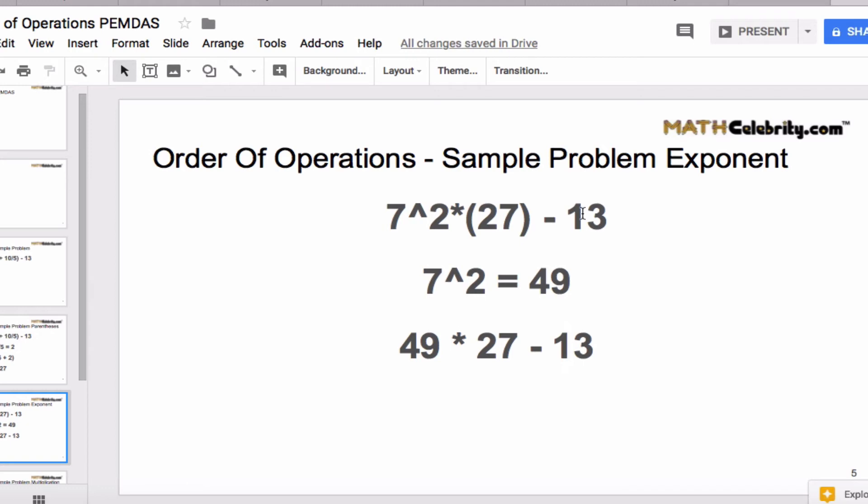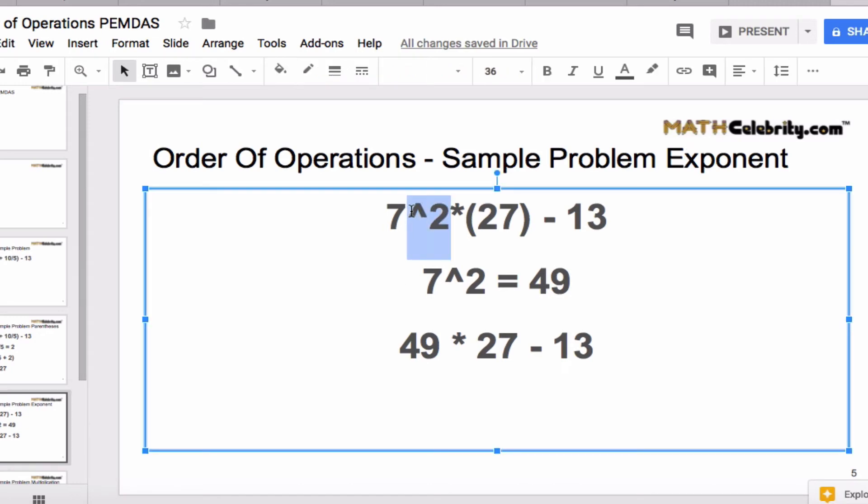So the next piece in the PEMDAS steps is E for exponent, and so we want to evaluate this piece right here which is 7 squared. So 7 squared is 49, and if we simplify this now we have 49 times 27 minus 13.